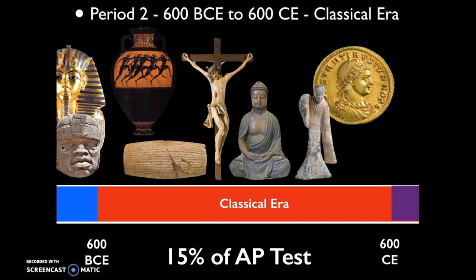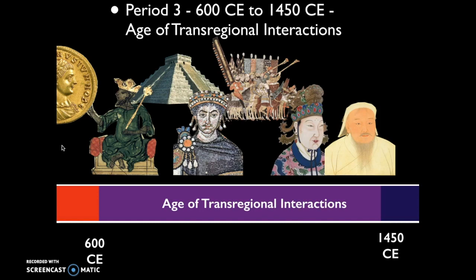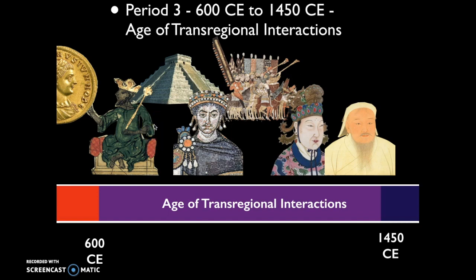That represents about 15% of the AP test. Period 3 is the age of trans-regional interactions, where more and more empires rise and fall and ideas spread along trade networks like the Silk Road, the Indian Ocean Sea Lanes, and the Trans-Saharan Network. We'll see empires like the Byzantine Empire and the Sui, Tang, Song, Yuan, and Ming dynasties in China. We'll talk about the rise and fall of the Mongols, and most importantly the formation of the Islamic caliphates and the spread of Islam. In the Americas we'll cover societies like the Maya and later the Incan and Aztec empires, and in Africa the formation of major kingdoms like Ghana and Mali. This age of trans-regional interactions represents 20% of the AP test, from 600 CE to 1450 CE.